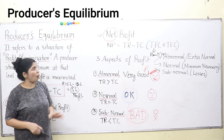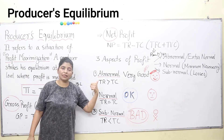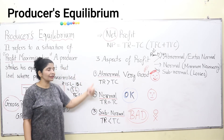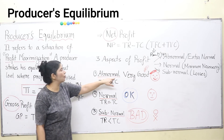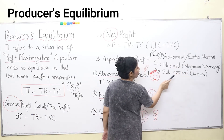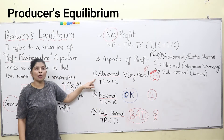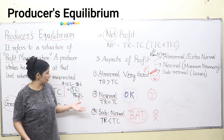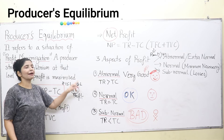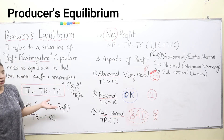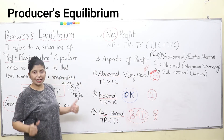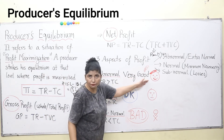There are three basic aspects of profit. Whether a business will continue or a producer will shut down depends on these three aspects. Number one is abnormal profit, also called extra-normal profit. Normal means minimum necessary, and subnormal means losses. Abnormal profit means very good profit — if a producer is earning an additional amount over and above his cost, that is abnormal profit. The producer is very happy and it's a win-win situation.